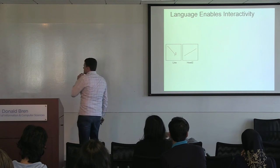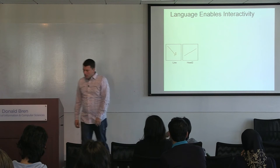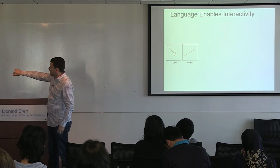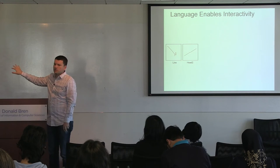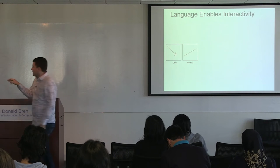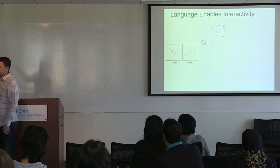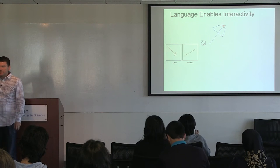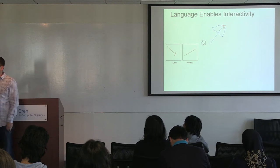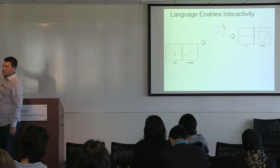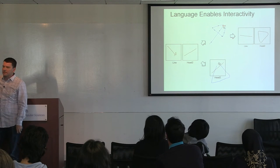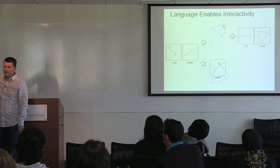This also enables interactivity — we can explicitly help the system get the correct understanding of the language. If it's learned a misguided notion of what a line is from just one example, we can go in and interactively correct that segmentation: we take the example's sampled points and indicate the correct boundary between a line and a head. Then the system updates its model of the parts. Alternatively, we can give it a direct example of just the arrowhead component, and it updates its model accordingly.